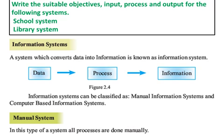Let's see what is the meaning of an information system. A system which converts data into information is known as an information system. Information systems can be classified into two categories: the first is a manual information system and the other is a computer-based information system. In a manual system, all processes are done manually.